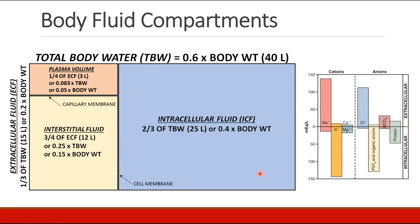Here is a figure that describes everything we just summarized: total body water being about 60% of body weight, intracellular versus extracellular fluid, with most of the volume being intracellular, and the extracellular fluid subdivided into interstitial fluid and plasma volume, with some sample calculations. I've also included a chart summarizing the location of cations and anions commonly found in the body, whether they tend to be primarily intracellular or extracellular. You should be able to recreate all of the information on this slide as part of an examination.